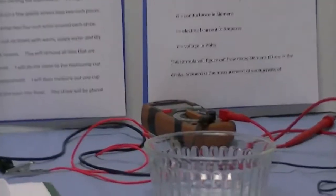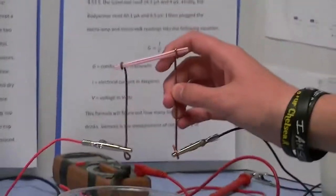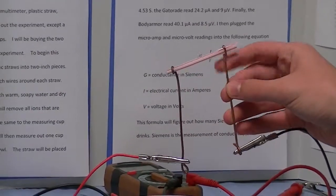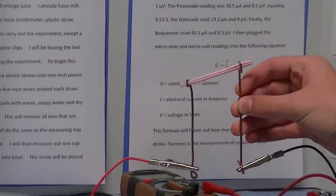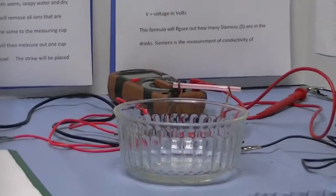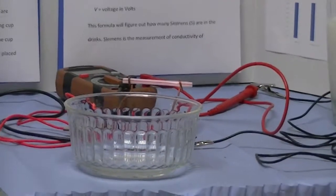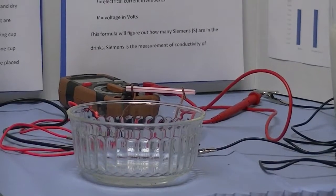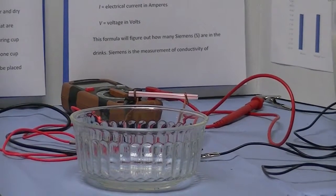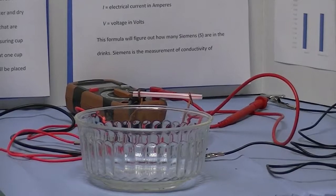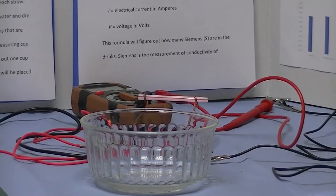To begin the experiment, I cut 6 straws into 2-inch pieces and attached them to 5-inch copper wires. Then I rinsed out 6 bowls with warm, soapy water and dried them with paper towels. This removed all ions that were already in the bowl. I did the same to the measuring cup before and between each measurement.